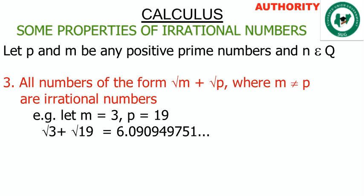For example, let m equal 3 and p equal 19. Then root 3 plus root 19 gives us 6.090949751 continuously. Once again, it is non-terminating and non-repeating in blocks, which makes it an irrational number.